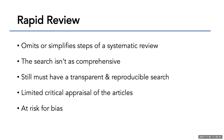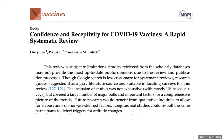Then there are rapid reviews. These are systematic in nature, but they tend to omit or simplify some of the steps of a systematic review. The search isn't nearly as comprehensive, though you're supposed to still be transparent in where and how you search. There is limited critical appraisal of the articles, so there is an increased risk of bias. These saw a lot of use for COVID-19 because people didn't have 18 months to get data out there — it needed to be done much more quickly.